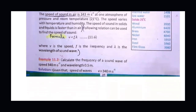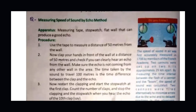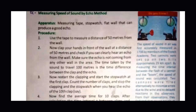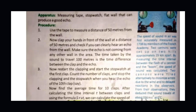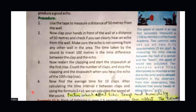Now, with the help of an activity, we will measure the speed of sound using the echo method. We will use a measuring tape, a stopwatch, and a flat wall to produce a good echo. You have to measure a 50-meter distance from the wall. You will use a clap to produce sound and use the stopwatch to time the echo.